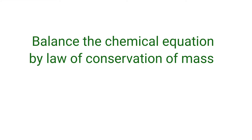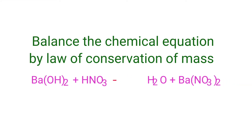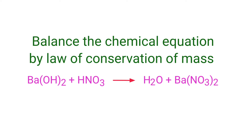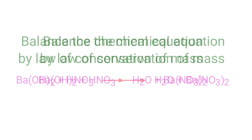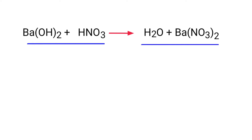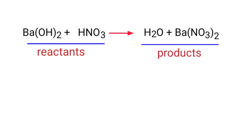Balance the chemical equation by the law of conservation of mass. Barium hydroxide plus nitric acid gives us water plus barium nitrate. In this equation, the reactants are barium hydroxide and nitric acid, and the products are water and barium nitrate.